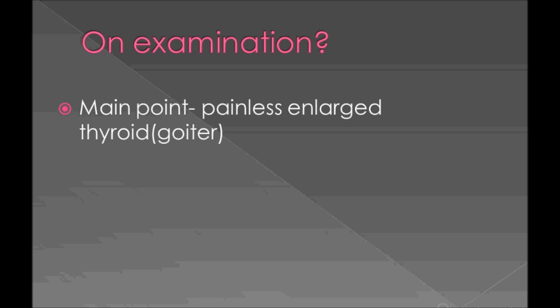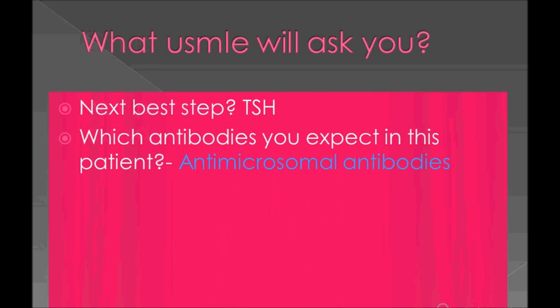On examination, the important point for Hashimoto's thyroiditis is to look for a painless enlarged thyroid — that's a very important point. The thyroid can be rubbery, sometimes not always symmetrical. So what you see are signs and symptoms of hypothyroidism along with this sign of painless enlarged thyroid.